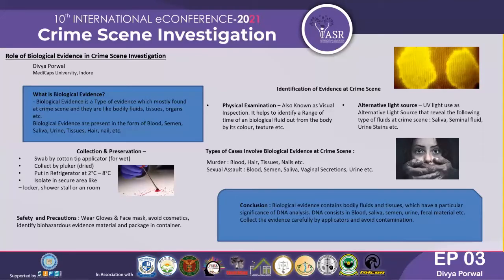DNA is the most important component extracted from biological evidence, which is used to solve crimes. Tissues are also considered — in situations involving self-defense or a fight, skin tissue collected from under a person's nails can be used as evidence. In sexual assault cases, the most common evidence is semen. Without semen evidence, it is difficult to confirm that the case involved sexual assault.